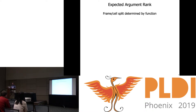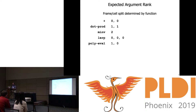The expected argument rank in a function application is determined by the function being applied, and that says how you split the arguments into frames of cells. So plus says give me two zero-dimensional arguments; vector dot product says give me two one-dimensional arguments; matrix inverse says give me a single two-dimensional argument. We could have linear interpolation on three scalars, or mix and match argument ranks — a polynomial evaluation function can take a vector of coefficients but a single scalar x value.